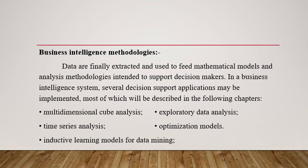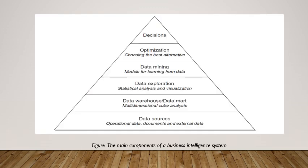This diagram shows the primary components of a BI system, working from the bottom upwards. At the base we have data sources such as operational data, documents like emails, and external data. Second, we have data warehouses or data marts with multi-dimensional cube analysis. Third, we have data exploration where statistical analysis and visualization is done. Fourth, we have data mining where data models for learning are applied. Fifth, we have optimization models used for choosing the best alternative. Finally, we have the decisions layer for making better decisions.